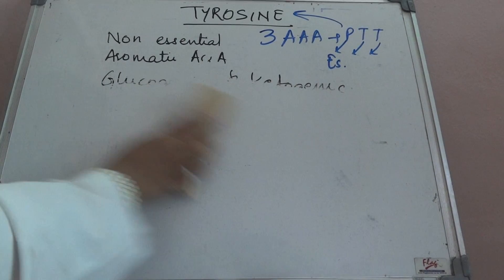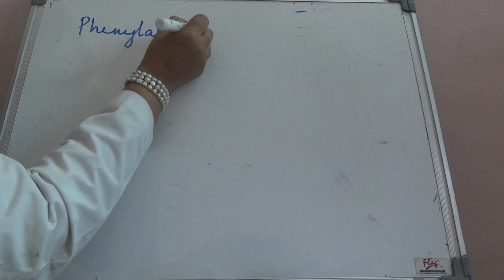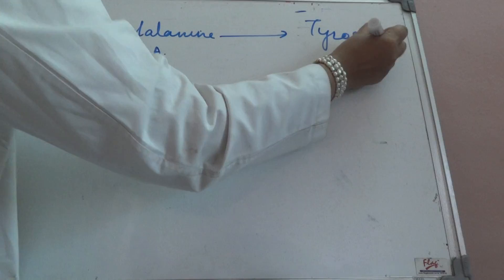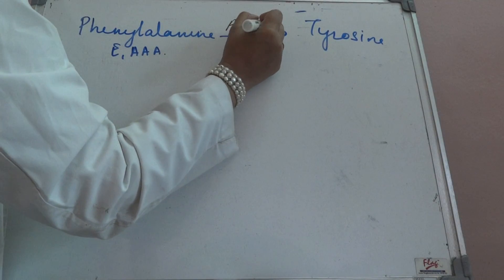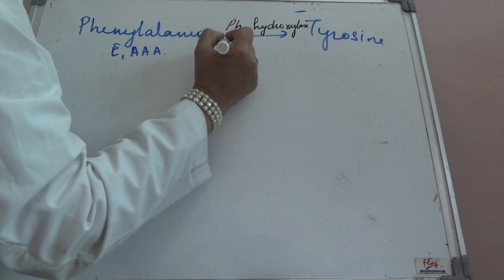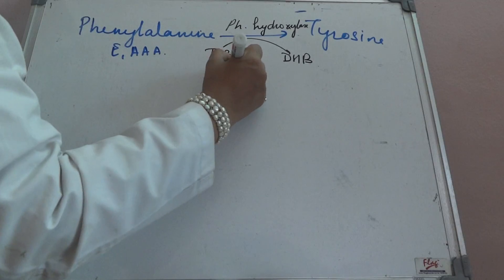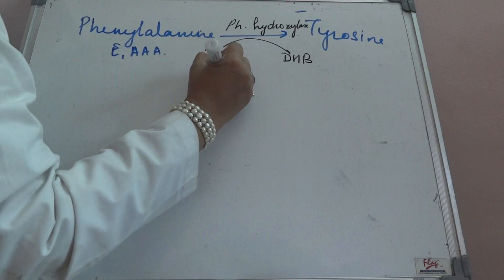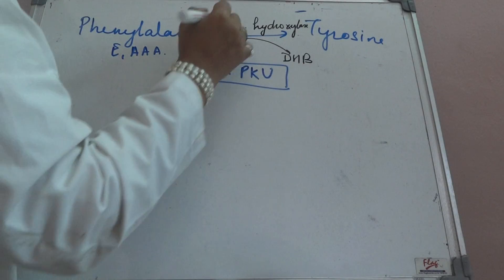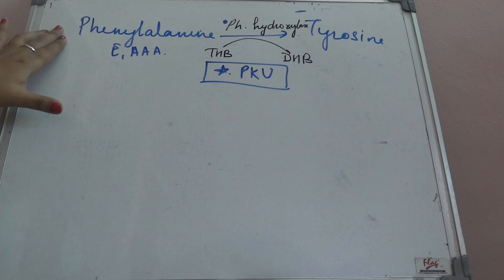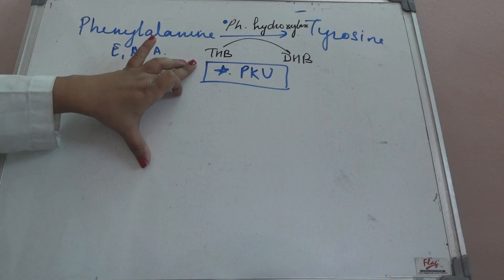Phenylalanine is an essential aromatic amino acid. It will form tyrosine in the presence of the enzyme phenylalanine hydroxylase, using tetrahydrobiopterin. This pathway has already been discussed, and the deficiency of phenylalanine hydroxylase leads to phenylketonuria (PKU). So if we are asked about tyrosine metabolism, first we must know that tyrosine is formed from phenylalanine through phenylalanine hydroxylase using tetrahydrobiopterin.